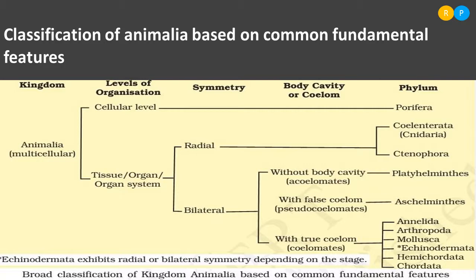The fourth phylum is Platyhelminthes (flatworms), showing organ or organ system level of organization. Their symmetry is bilateral, and coelom is absent — they are acoelomate. The fifth phylum is Aschelminthes, showing organ system level of organization with bilateral symmetry, and they possess a false coelom — making them pseudocoelomates. Aschelminthes is the one phylum where we see false coelom.